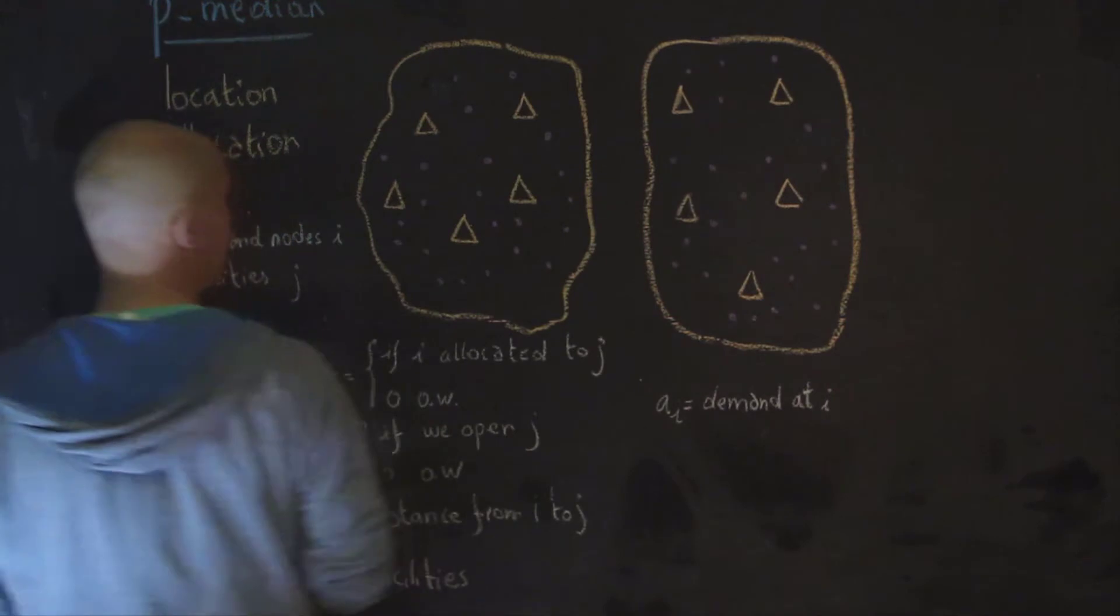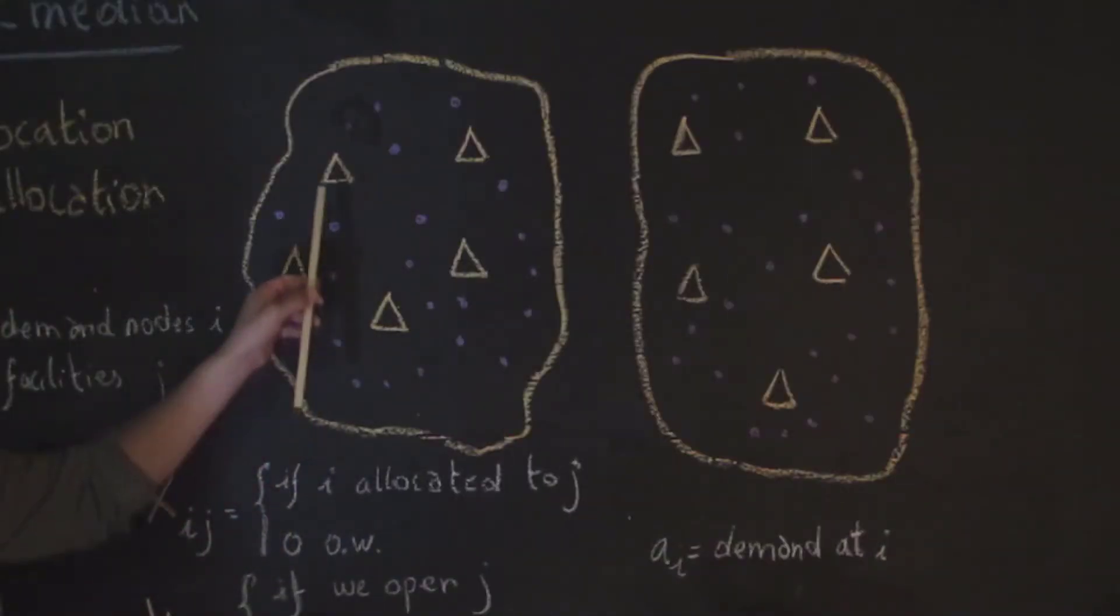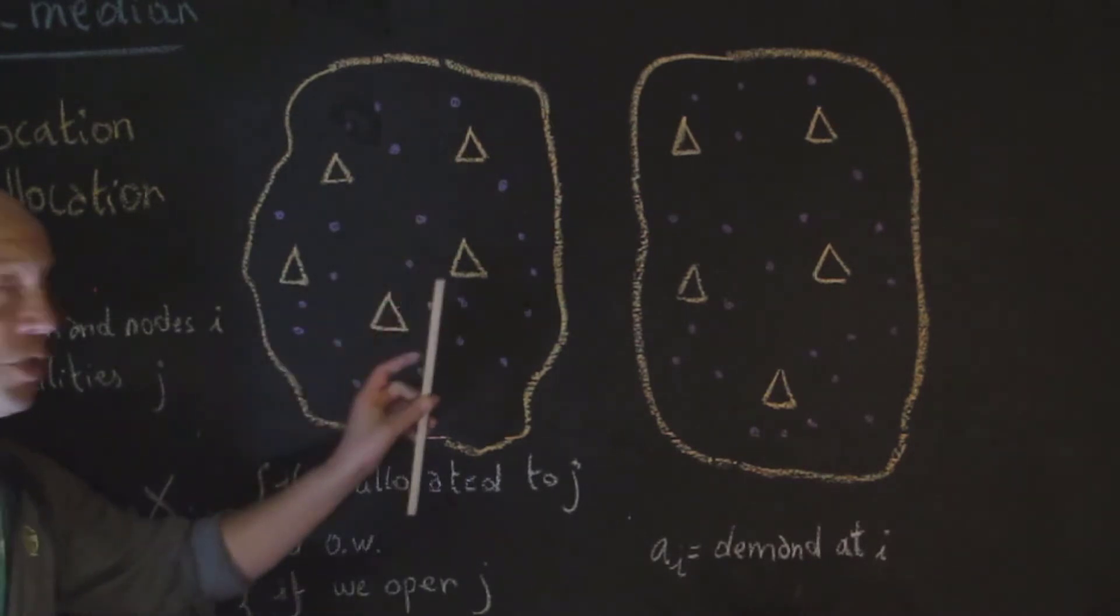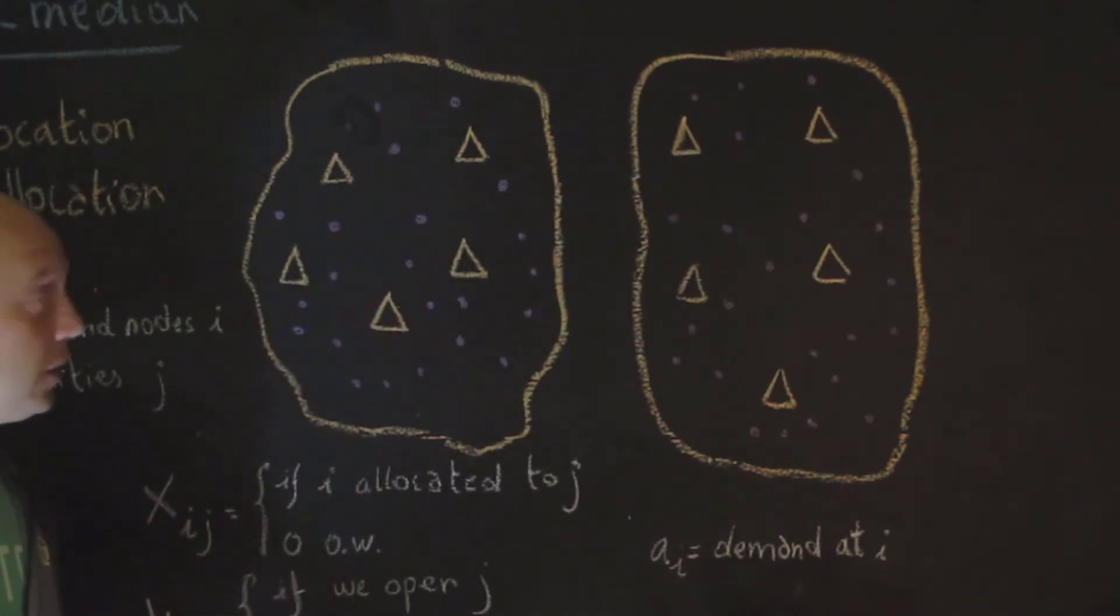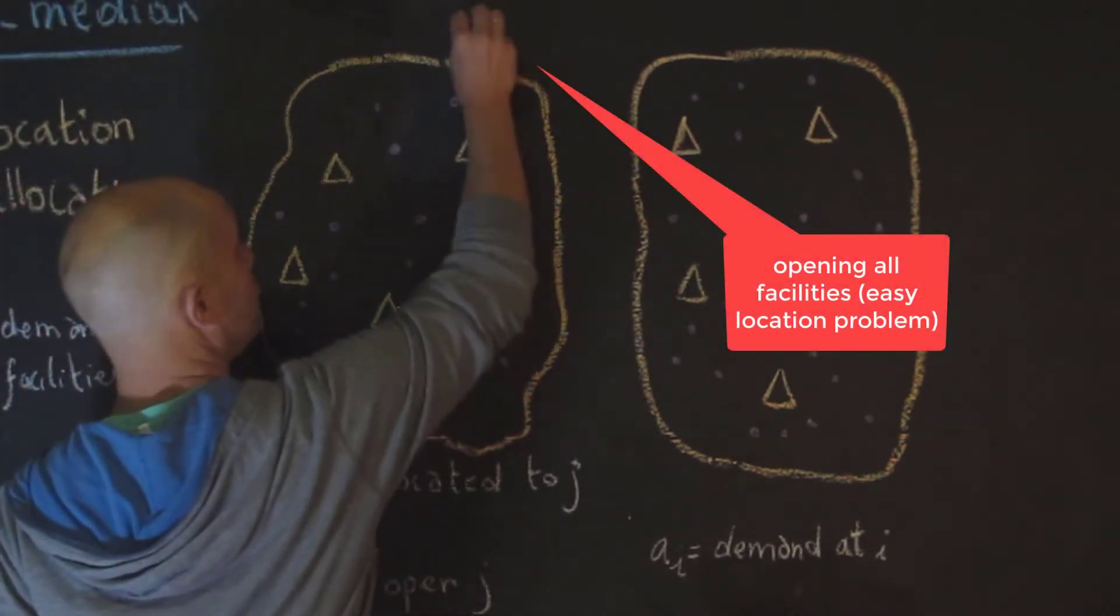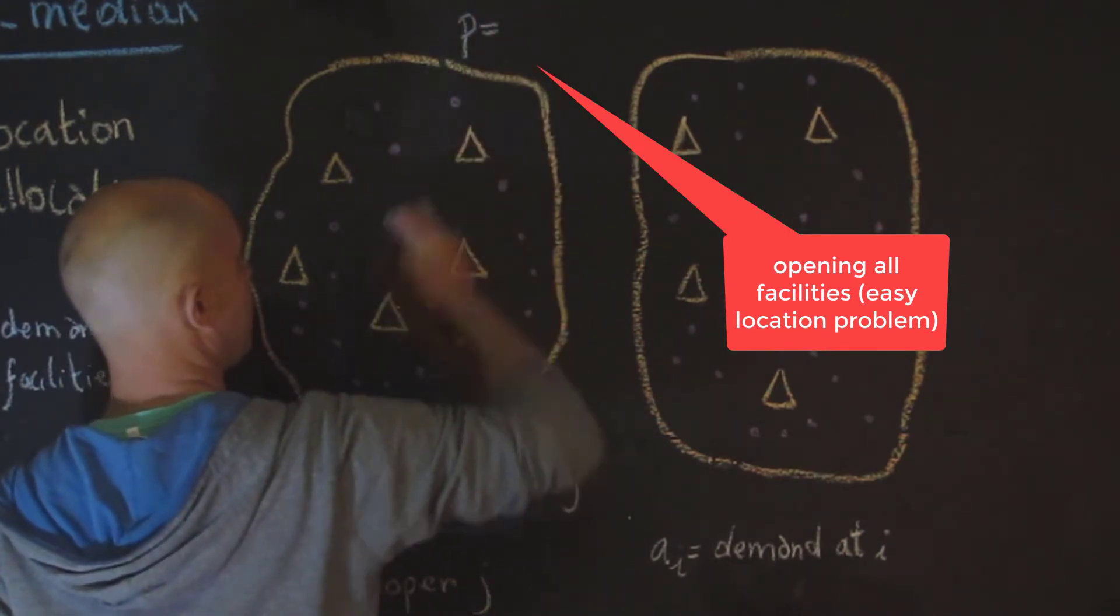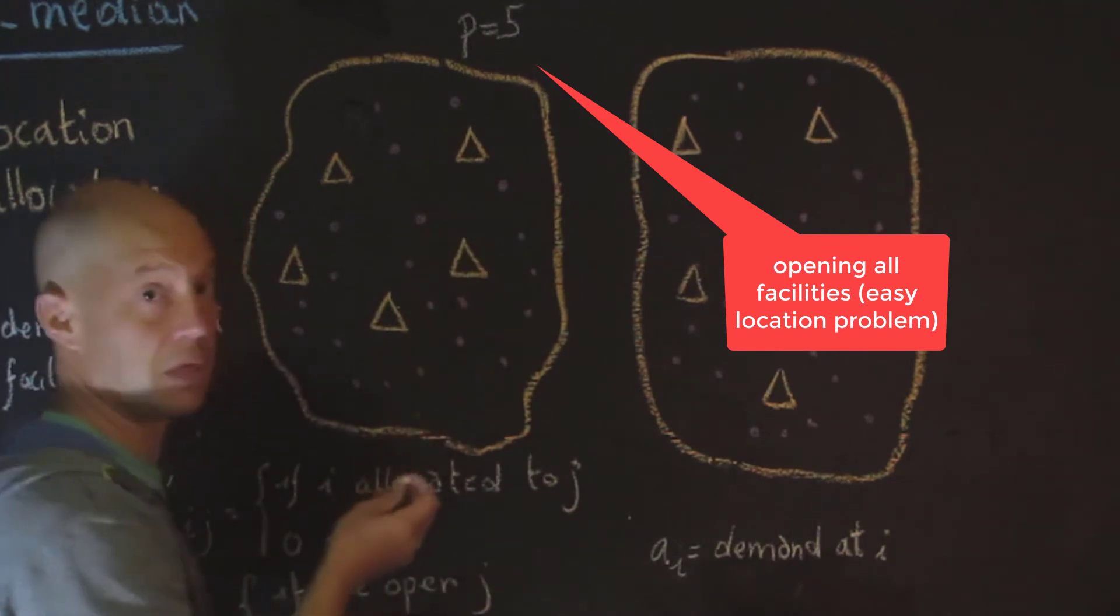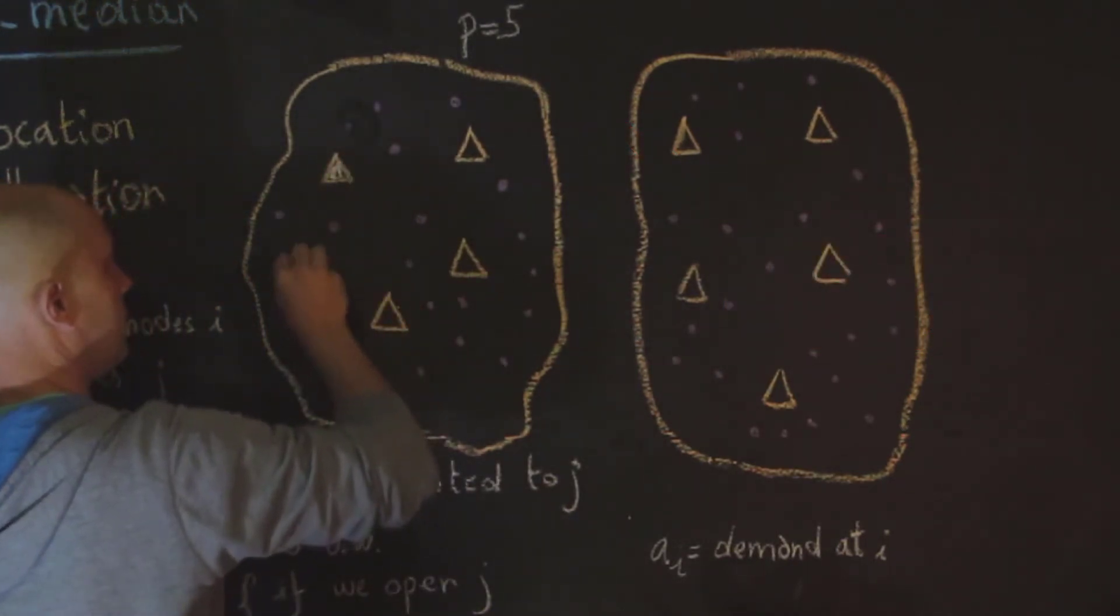So I'd like to show you a little problem here. Those triangles represent potential locations for schools. Now, each of these purple dots here represent a demand node. And the question is, if, for instance, I could afford to open all the facilities, so 1, 2, 3, 4, 5, that's very easy in this case. I can open all of them, right here.